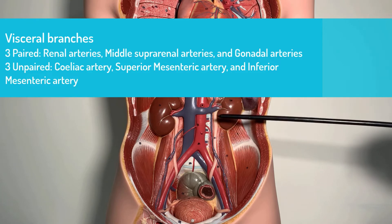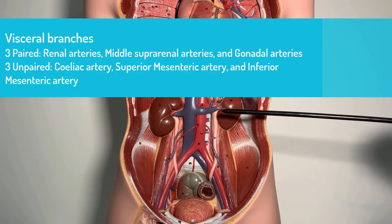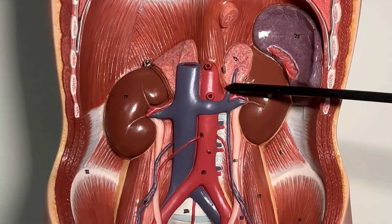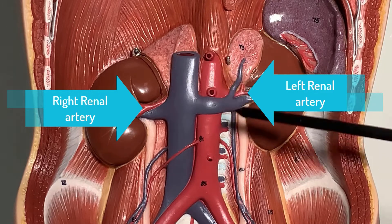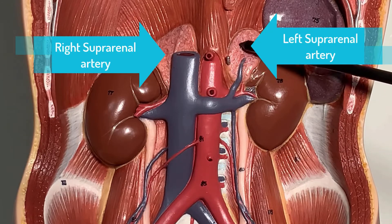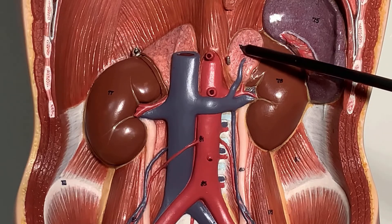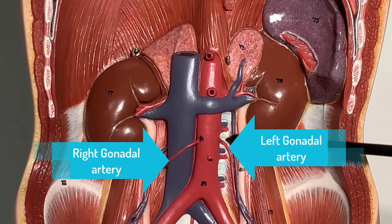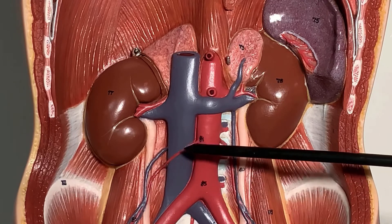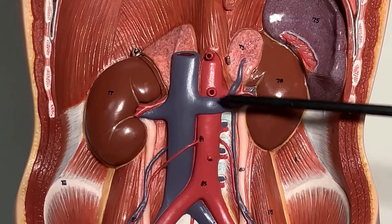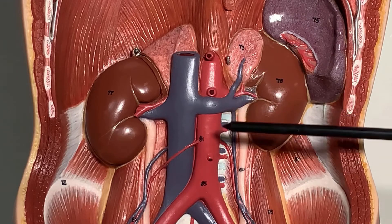Among the visceral branches, we have paired and unpaired visceral branches. For the paired visceral branches: first is the pair of renal arteries — both left and right. Second are the suprarenal arteries supplying the suprarenal glands, which are not visible in this model but will be shown on another model. Third, visible on both sides, are the gonadal arteries — called the testicular artery in males and the ovarian artery in females.